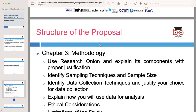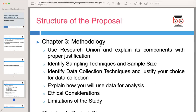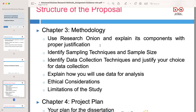Next is chapter three: methodology. In this chapter, you will outline the research methodology you are planning to employ in your study. The methodology provides the road map for how you will gather and analyze data to address your research questions. Use the research onion and explain its components with proper justification. The research onion is a multi-layered approach that helps you structure your research. Explain each layer of the onion, including philosophies, approaches, strategies, choices, and techniques, justifying your choices based on the nature of your research and objectives.